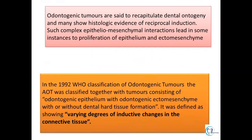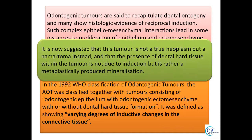In 1992, WHO classified odontogenic tumours and stated that AOT consists of odontogenic epithelium with odontogenic ectomesenchyme with or without dental hard tissue formation. However, AOT shows varying degrees of inductive changes in the connective tissue. It has been suggested that AOT is not a true neoplasm but rather a hamartomatous malformation, and the dental hard tissue found in this tumour is not due to induction but because of metaplastically produced mineralization.